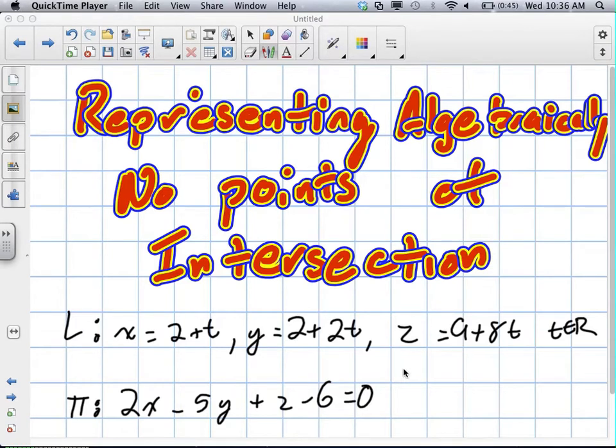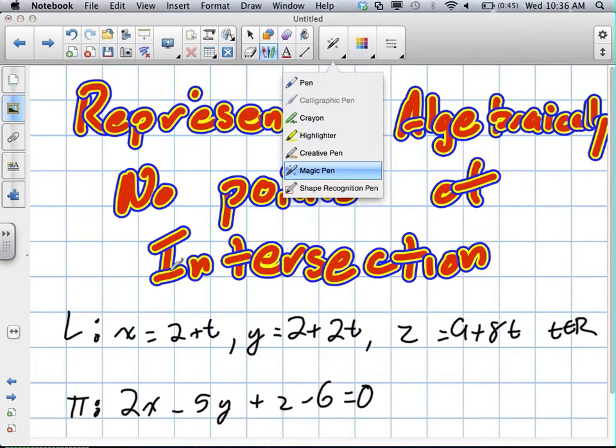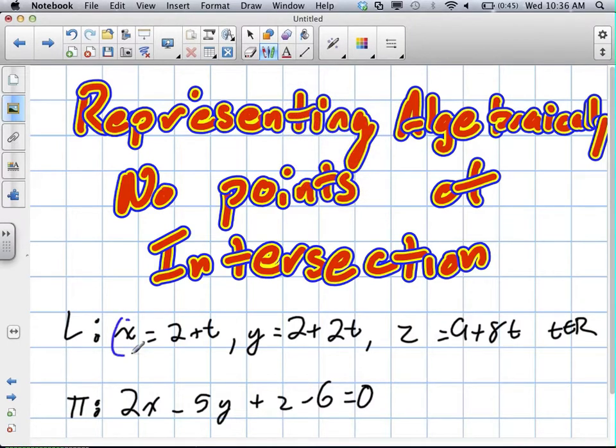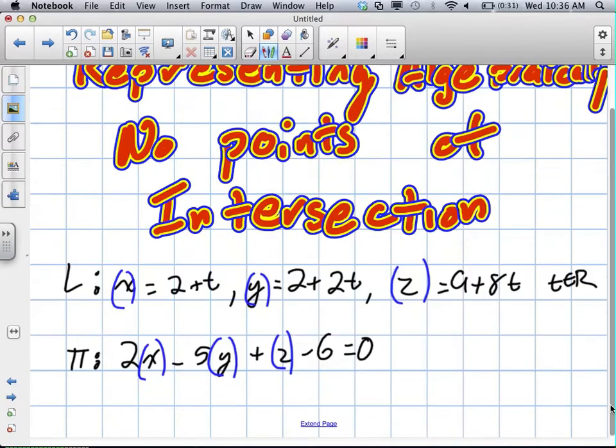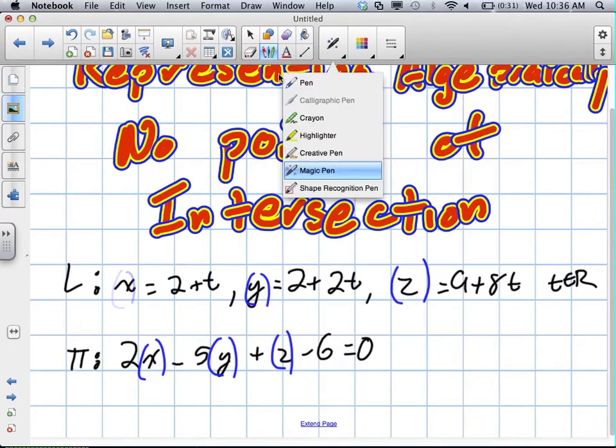Okay, but in this case, what we're actually going to do is take, again, because this is already in parametric form, we're going to take our x, y, and z value, and plug it in for x, y, and z, same as we did before in the Cartesian plane. Do this one a little quicker this time.